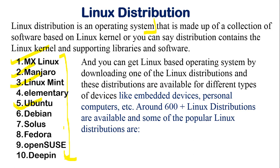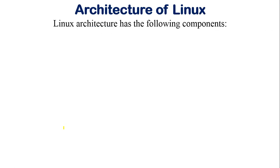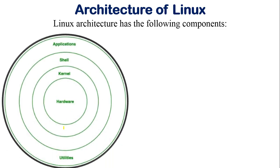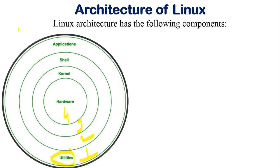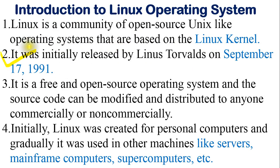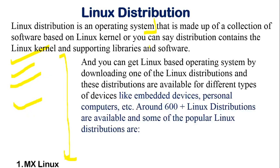Now we move to the architecture of Linux. The Linux architecture has the following components — looking at this graphic, you can see layers: utilities, shell, system library, kernel, and hardware. Each layer has a separate function. The kernel is the most important component, as the operating system is totally based on the Linux kernel.